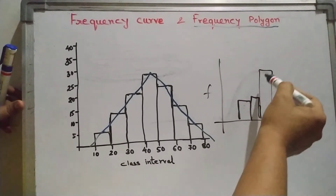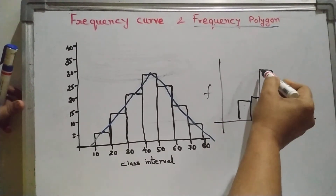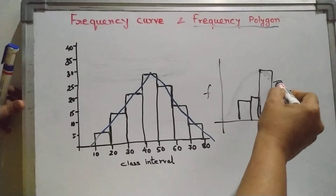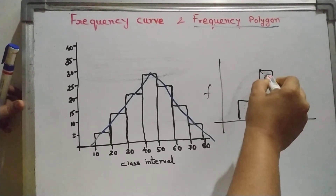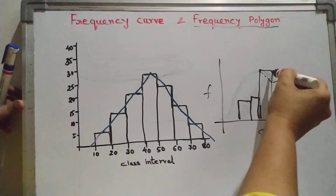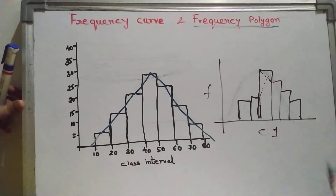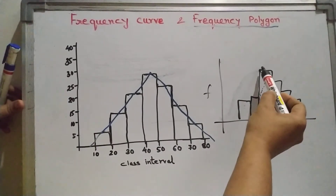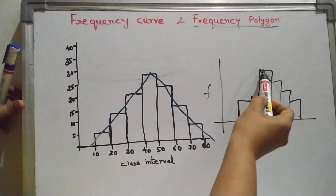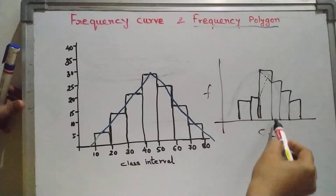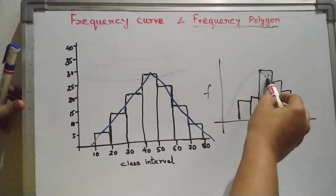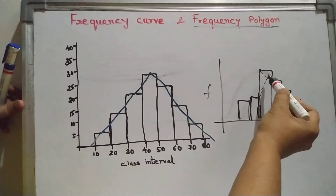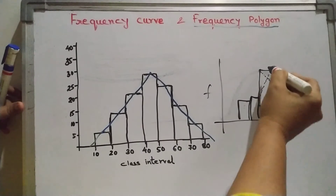This bar is the tallest, so the highest frequency is here. From the top corner of this highest-frequency bar, we draw a diagonal dotted line to the top of the adjacent rectangular bar on the opposite side, like this. From this corner to that side of the adjacent rectangular bar. Then you get an intersecting point — suppose it is point C.